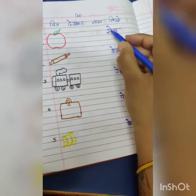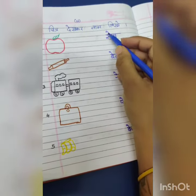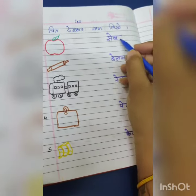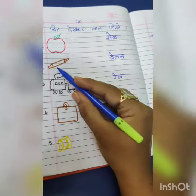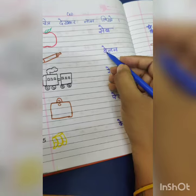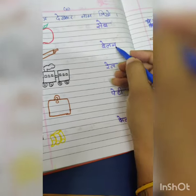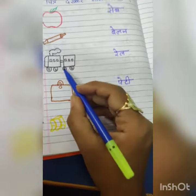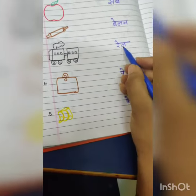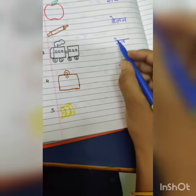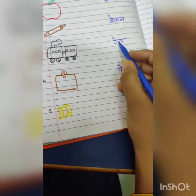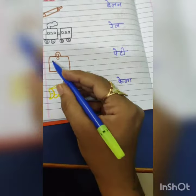So our first picture is sa mein a ki matra — sev. Second, belan: ba mein a ki matra, then la, then na — belan. Third is rail: ra mein a ki matra, then la — rail.